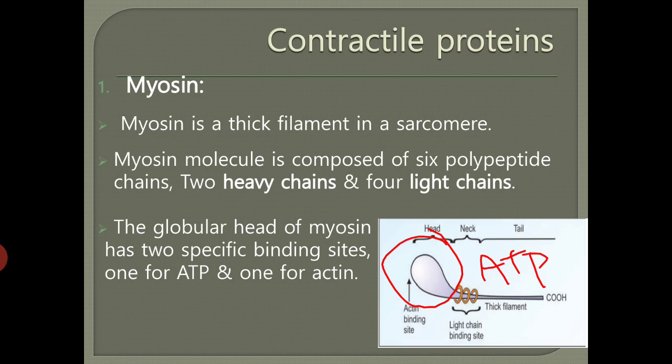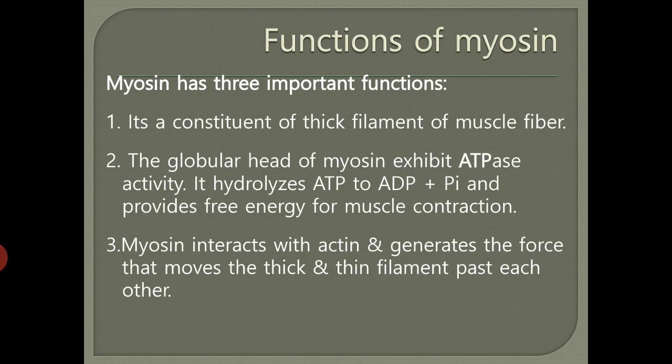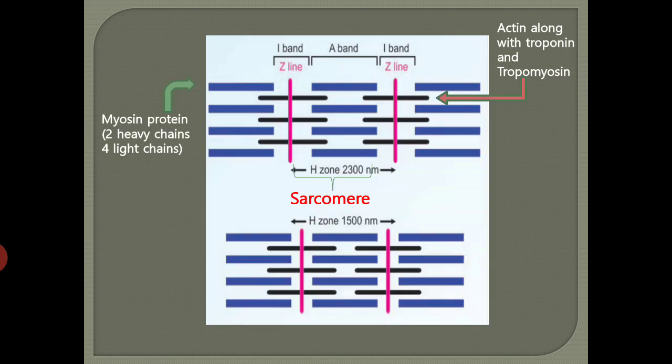Myosin has three important functions. First, it is a constituent of the thick filament of the muscle fiber. Second, the globular head of myosin has ATPase activity, so it can hydrolyze ATP into ADP plus Pi, providing the energy for muscle contraction. Third, myosin interacts with actin and generates force that moves the thick and thin filaments past each other.